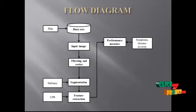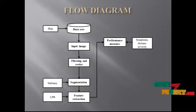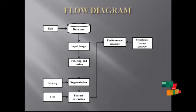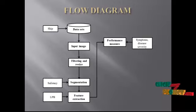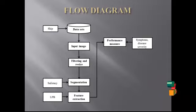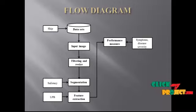In the preprocessing step, we implement filtering and resize. These two preprocessing methods are applied to the input image. In filtering, we remove noise using the Gaussian filter. In resize, we convert the image shape according to the given row and column values.